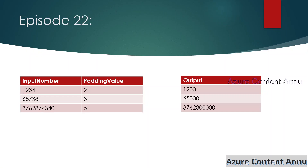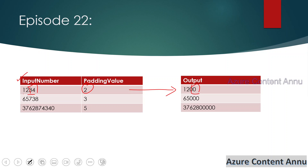This is a simple use case where we have some input numbers. The first number is 1234, and we have to add zero padding for the last two characters of this number. That means we have to replace the last two characters by zero, and hence the output should become 1200.